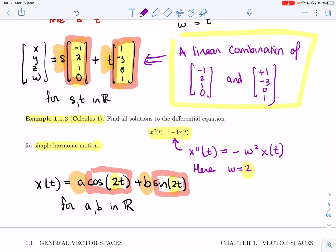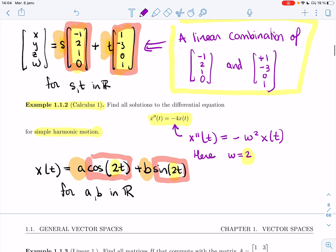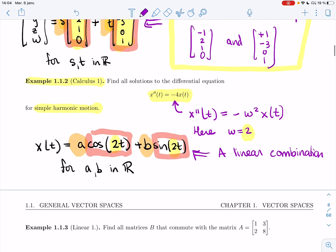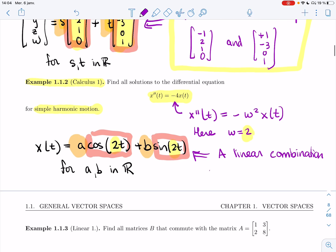It's exactly the same shape, except that instead of living in the world of vectors, we're living in the world of functions here. So I would call it a linear combination of two functions, cosine(2t) and sine(2t), even though we haven't made the definition of a linear combination in the space of functions yet.